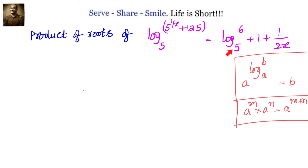We have to find the product of roots of this equation. The equation given to us is: logarithm of (5 to the power of 1/x plus 125) to the base 5 equals logarithm of 6 to base 5, plus 1, plus 1 by 2x. At a higher level, our given problem looks like logarithm of x to base a equals b.